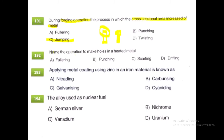The operation used to make holes in heated metal is punching, using a drift tool. If you want to apply a metal coating of zinc on an iron material, it is known as galvanization. Option C, galvanizing.